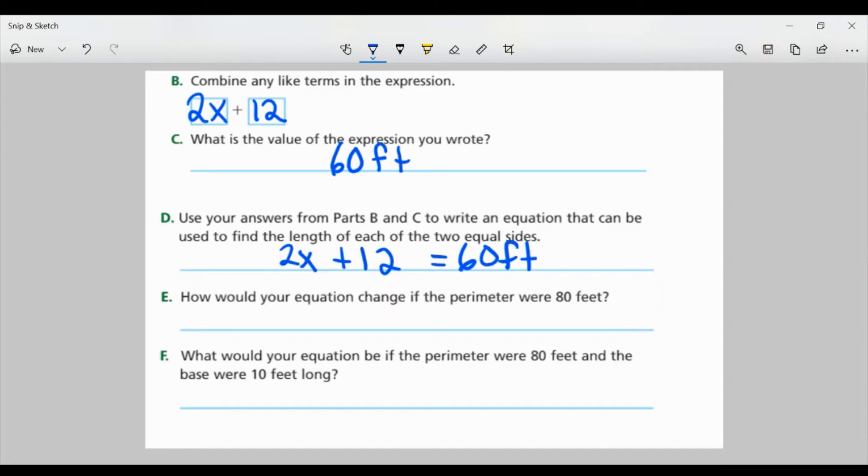We have our 2X plus 12, which is adding all three sides, X plus X plus 12. And we know it's equal to 60 feet.